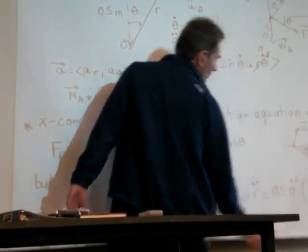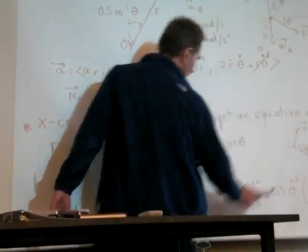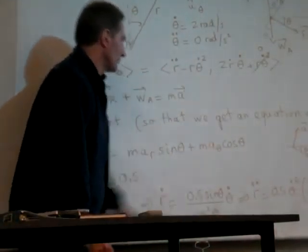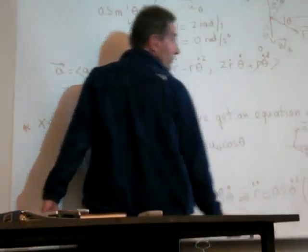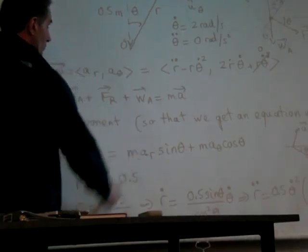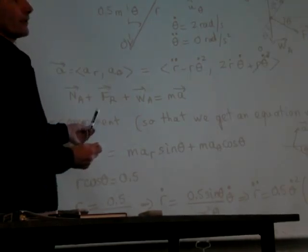So you have the two components of the acceleration, A theta and AR. This is the angle theta. So the X component of A theta is A theta cosine theta. And the X component of this one is going to be AR sine theta. That's what we have here. So now what's left to do, that's what also you started to do yesterday, is to compute AR and A theta.